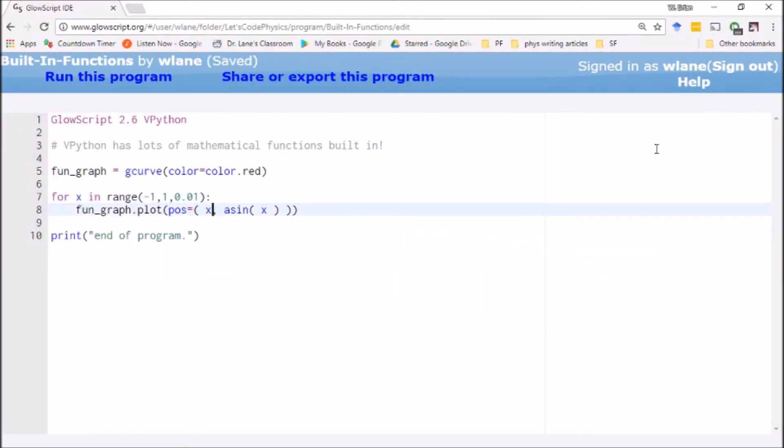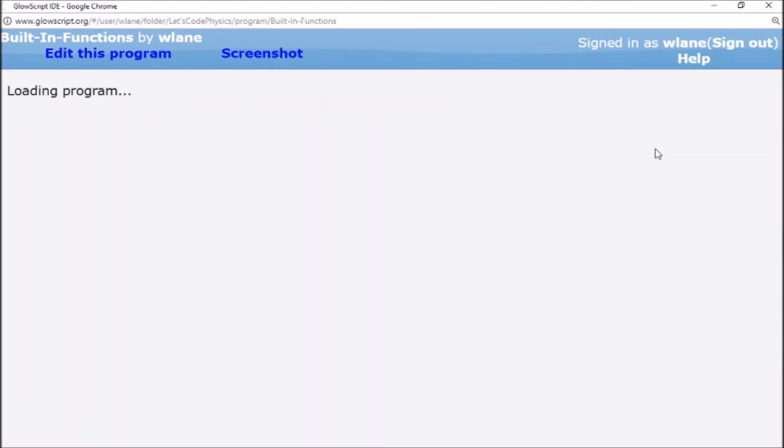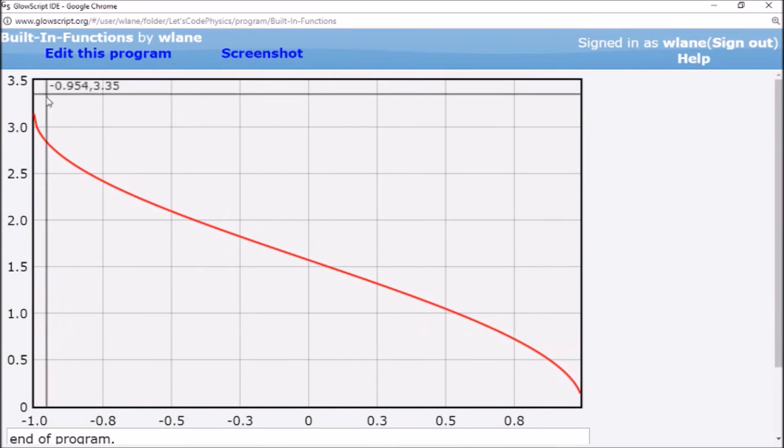And then, of course, I can do the same thing. I can get the arccosine. Control 2. Looks similar to the arcsine.